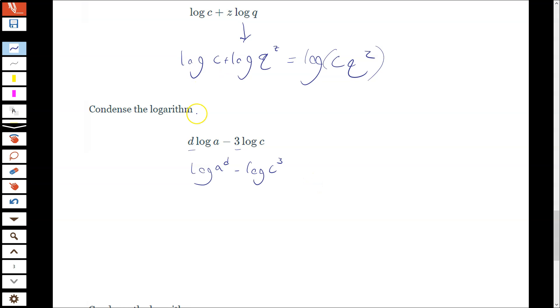And this time I'm subtracting, so remember subtracting outside the logarithm becomes division inside the logarithm. So log of A to the D over C to the third. And my logarithms are condensed.